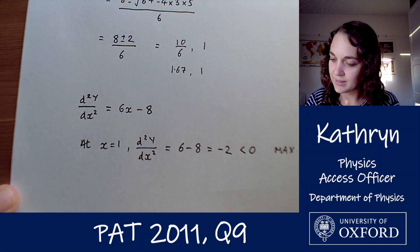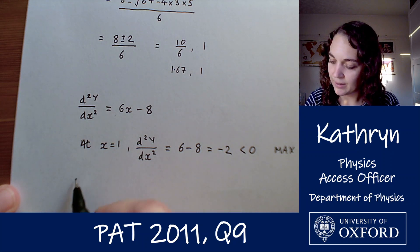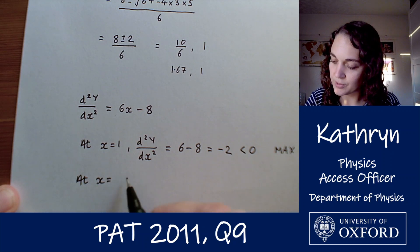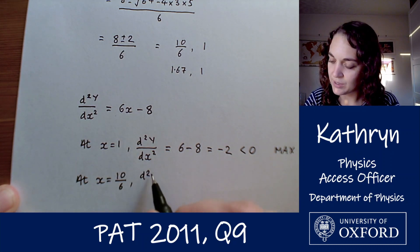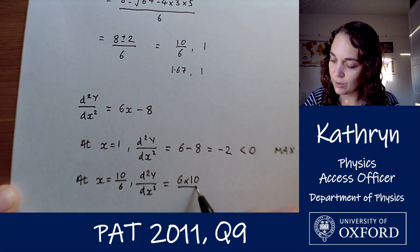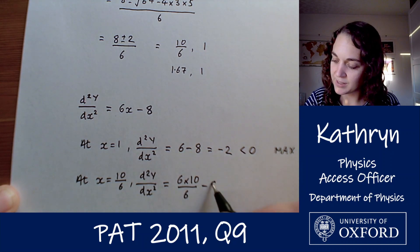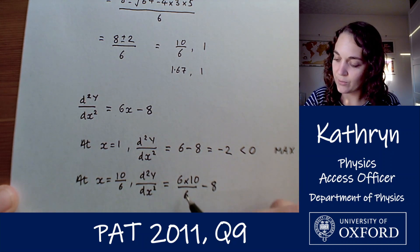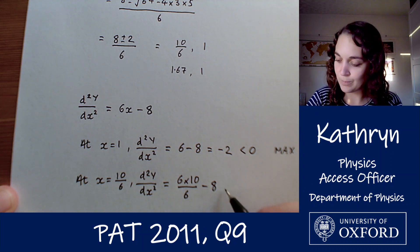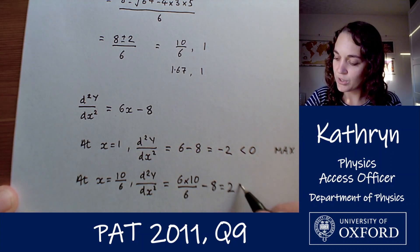And at x equals 10 over 6, d2Y by dx squared equals 6 times 10 over 6 minus 8. So that's going to be 10 minus 8, which is 2, which is greater than 0. So that is going to be a minimum.